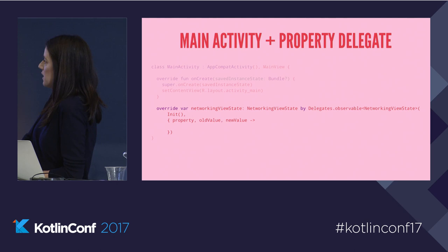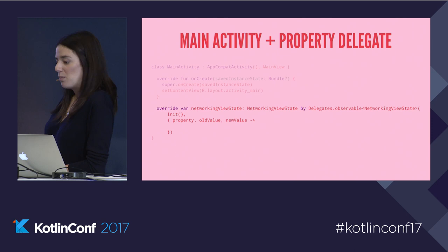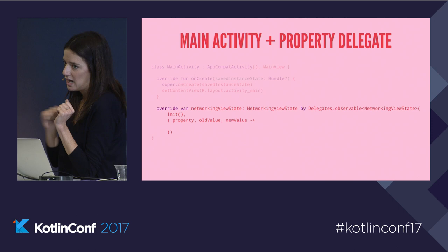So if we go back to our main activity, we can update it to say by Delegates.observable, passing it the type. Init is our initial value, and then we have property, old value, and new value. Now we have the ability to transition properly, animate properly, do whatever we want here. Our code is now all the things we wanted it to be: protected, updatable, testable, and very Kotlin-y. And that's it.